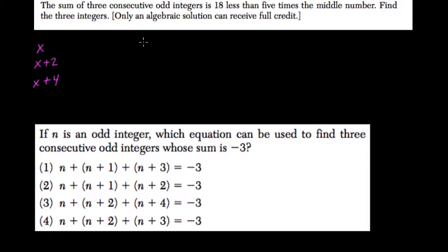They tell us that the sum of them, so if I add x plus x plus 2 plus x plus 4, because they said the sum that's adding is equal to 18 less than 5 times the middle number. So that equals 5 times the middle number, 5 times x plus 2 minus 18, because the three numbers is less than that, so to balance it, we have to subtract 18.